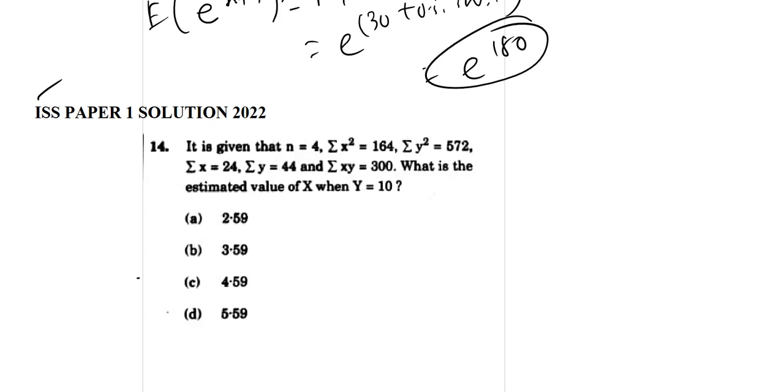So n equal to 4 is given. Summation x square is 164 and y square is 574. Summation x square is 4 and this. What is the estimated value of x when y equal to 10? So how do we do this? It's quite easy.